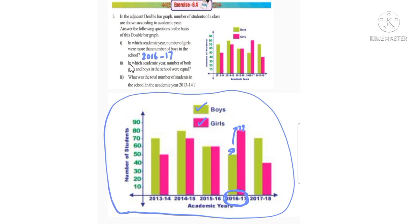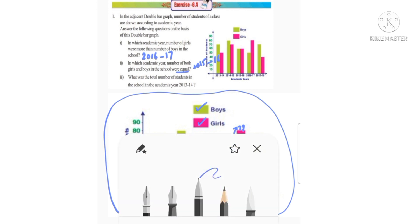Next question: in which academic year were the number of both girls and boys in the school equal? That means the pink and green bars should be at the same level. Both are equal in the year 2015 to 16. In 2015 to 16, pink and green are of the same height.